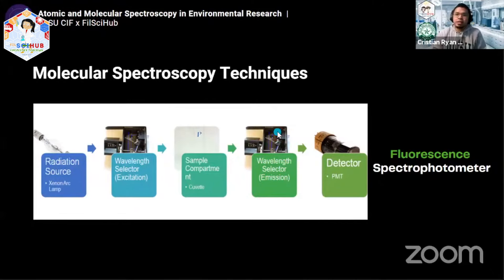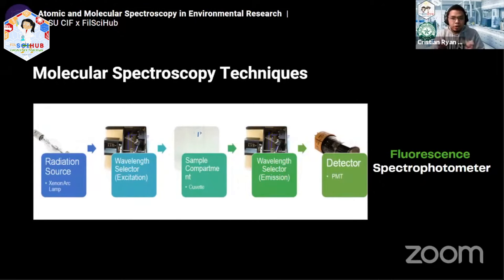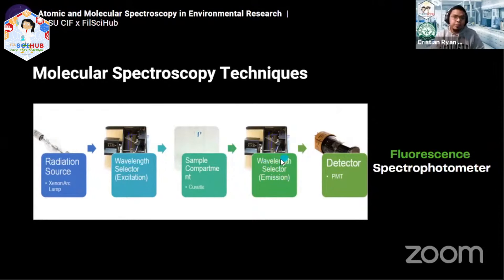We have two wavelength selectors because for fluorescent samples — when we say fluorescence — if earlier the target was a chromophore, now when the sample has a fluorophore, after it absorbs light, it also emits light later on. That emitted light is what the machine detects, so you also need to filter the emitted light of your sample. That's the concept of fluorescence.